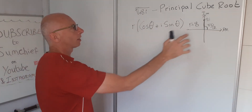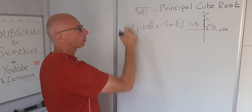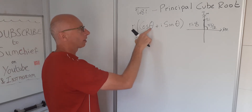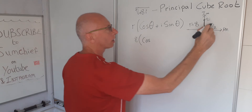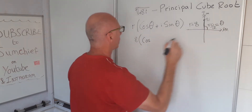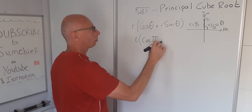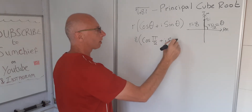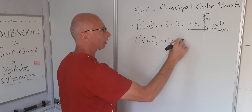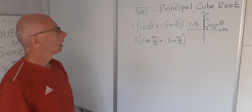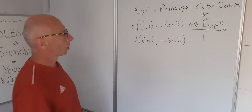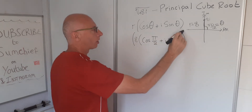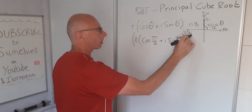So for this point, 8i, forgetting the cube root, we have 8 times cosine of pi over 2, plus i sine of pi over 2 — the input on both of these is pi over 2; they're always the same. But now we want the cube root, so what we need to do is raise all of this to the power of one third.